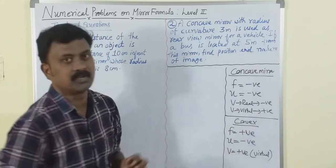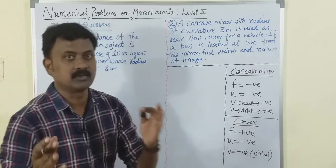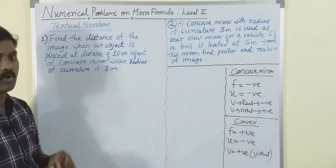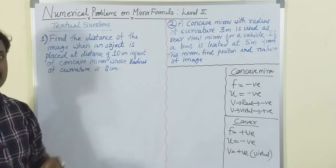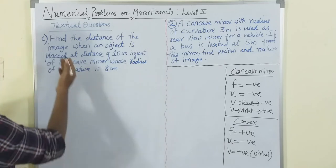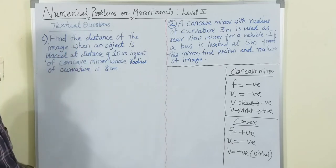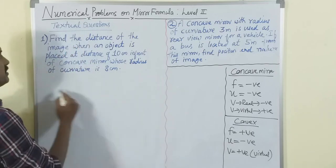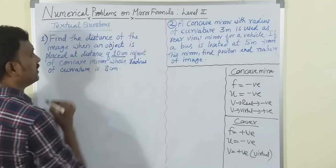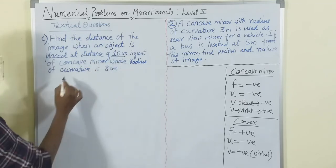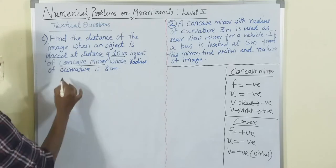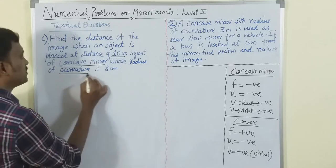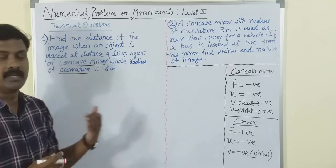These are the things to keep in mind. Let us go to the first problem. Find the distance of the image when an object is placed at a distance of 10 centimeters in front of a concave mirror whose radius of curvature is 8 centimeters.